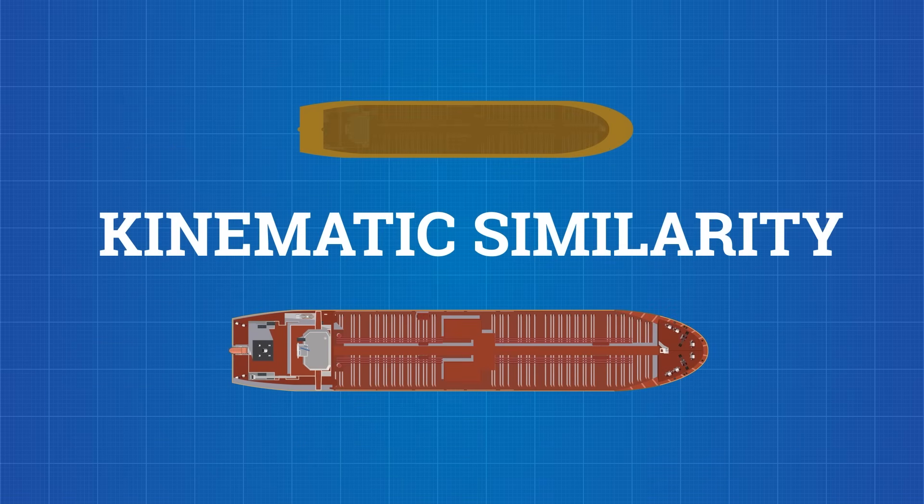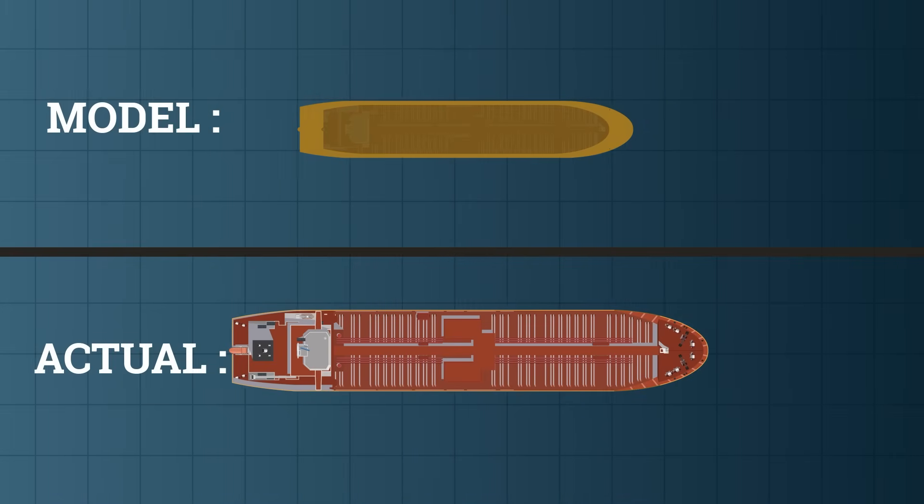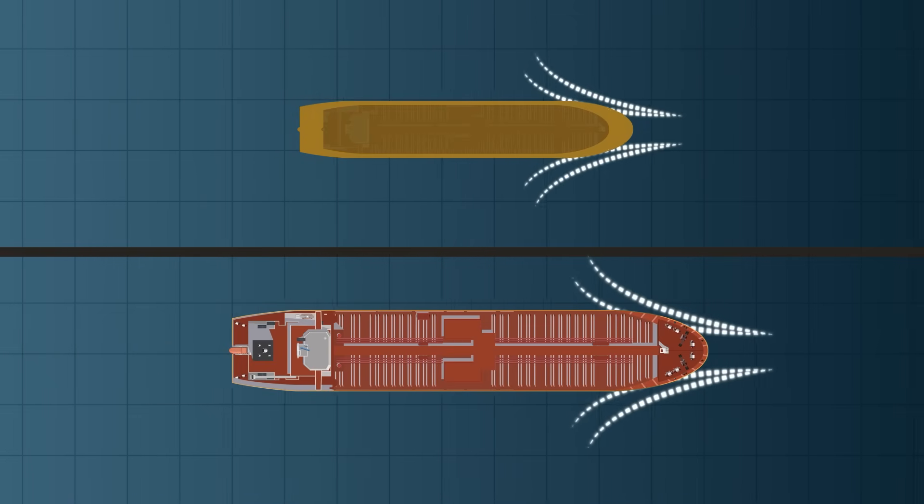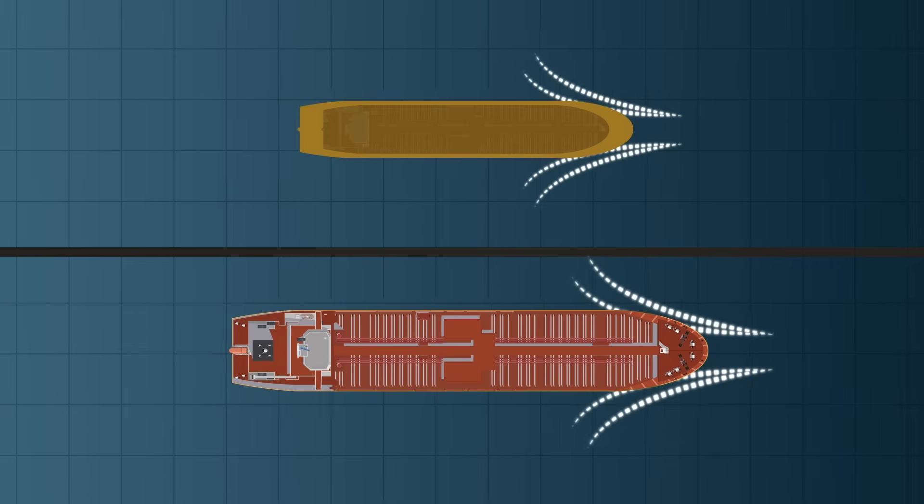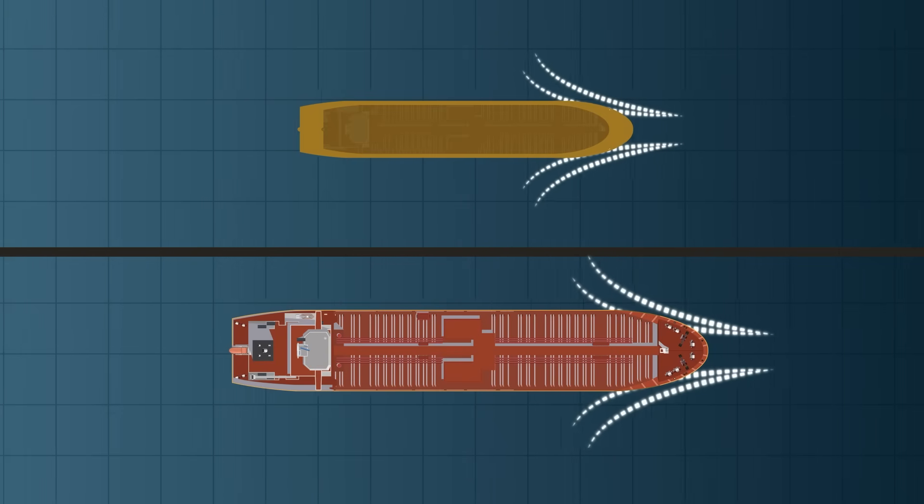Second, kinematic similarity. The motion of water around the model must match the motion around the ship. If a full-size wave hits the real bow at 20 knots, the model needs a scaled down wave hitting at a proportionally scaled speed.